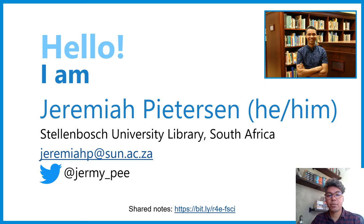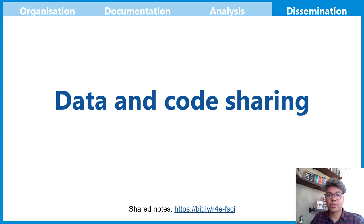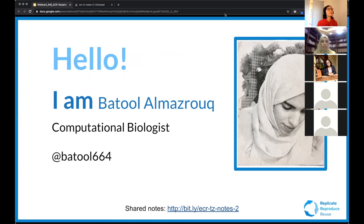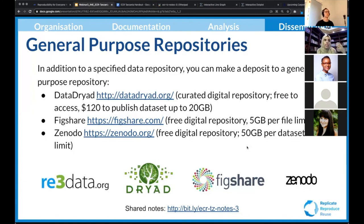Hi, I'm Jeremiah Peterson, manager of learning and training at Stellenbosch University Library in South Africa. When we speak about producing reproducible research, we cannot leave data and code sharing out of the conversation. I am Betul Al-Marzouq, a computational biologist. For general-purpose repositories, you have options like Figshare and Zenodo — I mostly use Zenodo. These are all free digital repositories, though with Figshare you get five gigabytes and with Zenodo it's more generous at 50 gigabytes. What I love about Zenodo particularly is that you can link it to GitHub and integrate it with other applications.